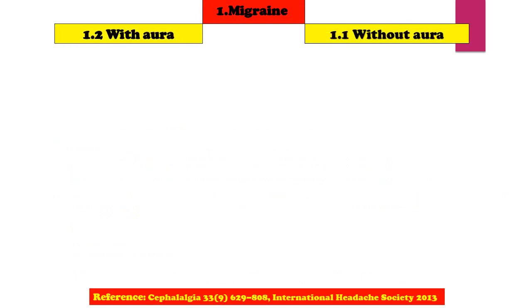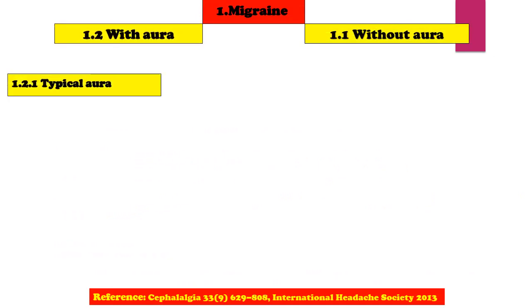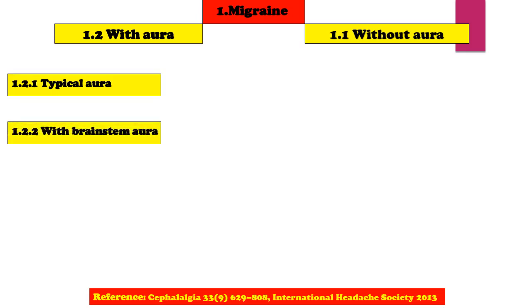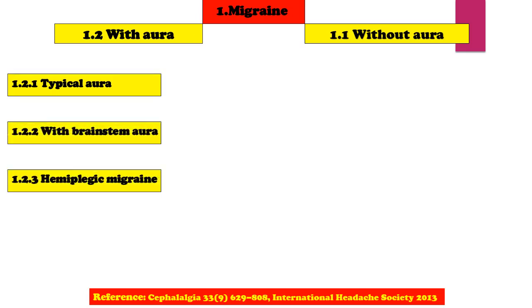Migraine is classified into Migraine without Aura and Migraine with Aura. Migraine with Aura is further classified into Migraine with Typical Aura, Migraine with Brainstem Aura, Hemiplegic Migraine, and Retinal Migraine.